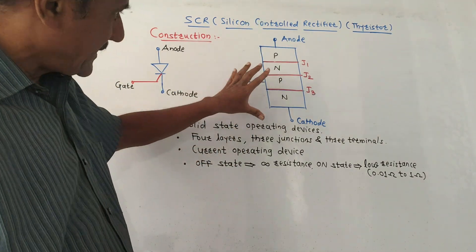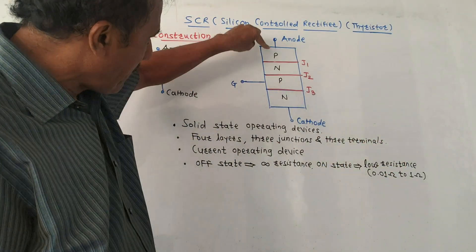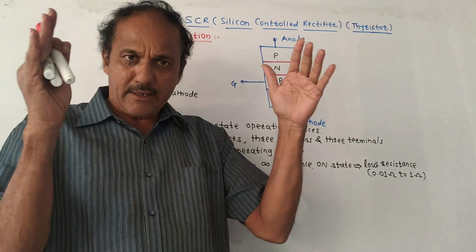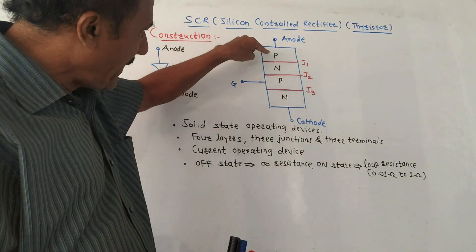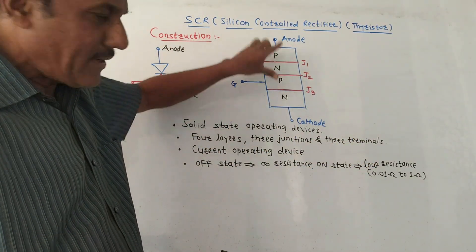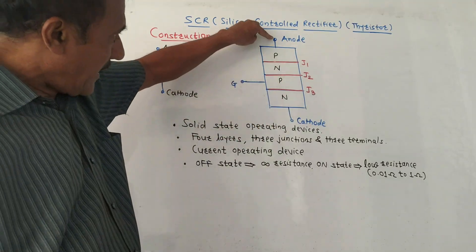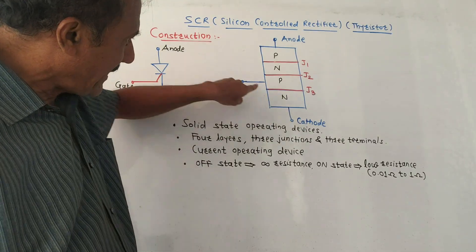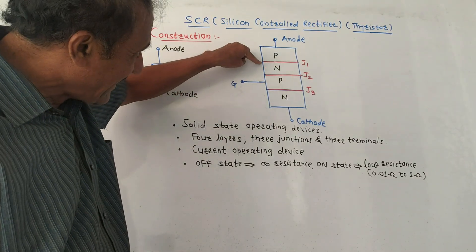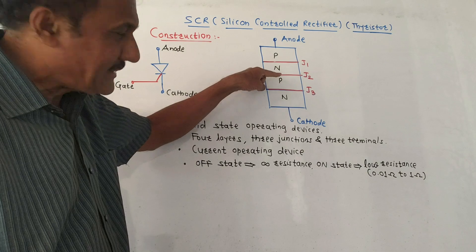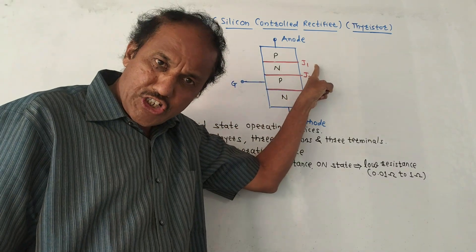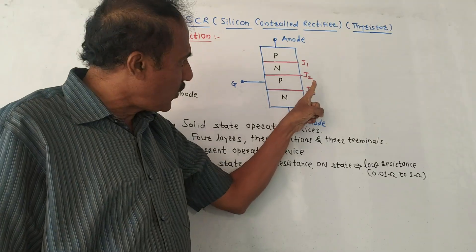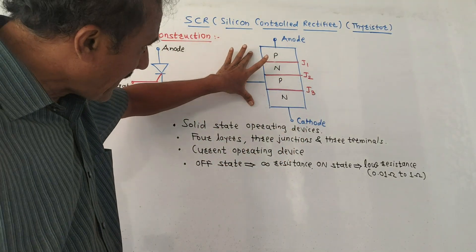It has basically four layers — P, N, P, N — formed by using P-type and N-type semiconducting layers. As shown in this diagram, there are three terminals: anode, cathode, and gate. These three horizontal lines represent three junctions: junction J1, junction J2, and junction J3.